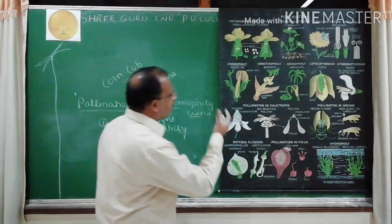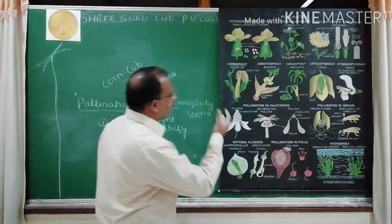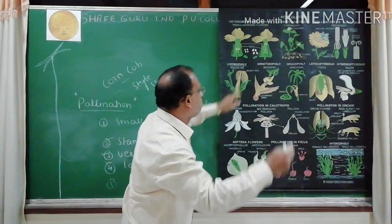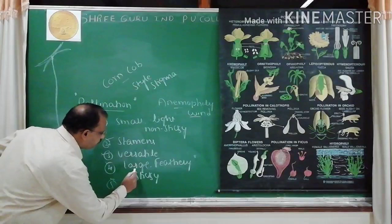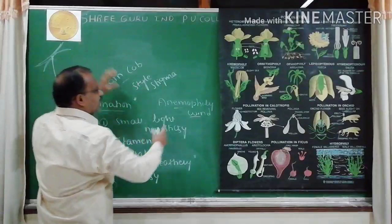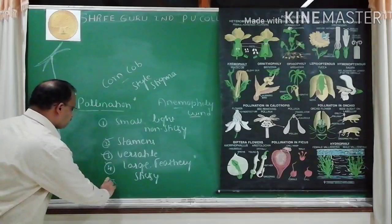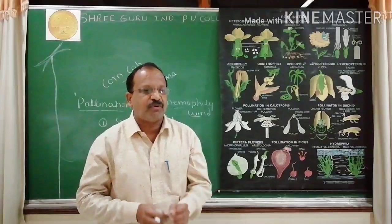For example, in a corn cob, the hair-like structures hanging are nothing but style and stigma. They whip in the wind to trap pollen grains. Stigmas are large, feathery, and sticky. If the flowers are small, they are aggregated to form inflorescence-like structures to become more conspicuous.